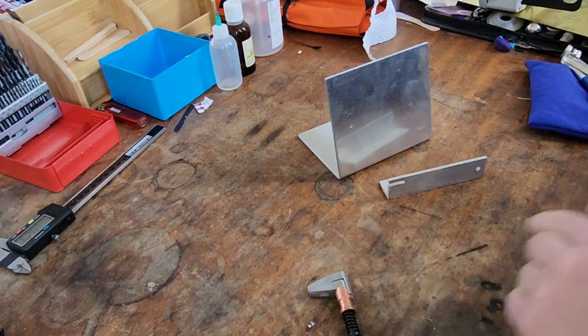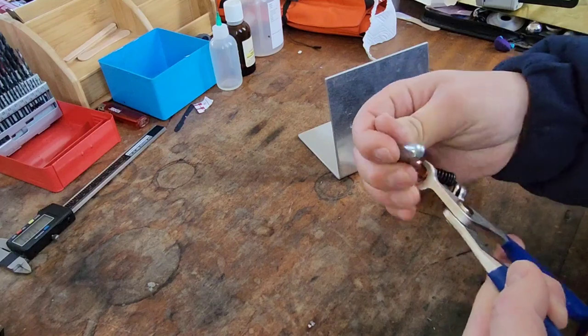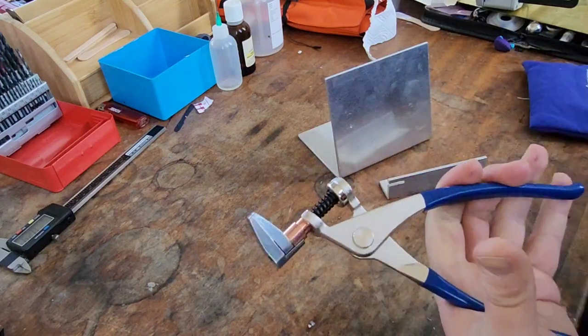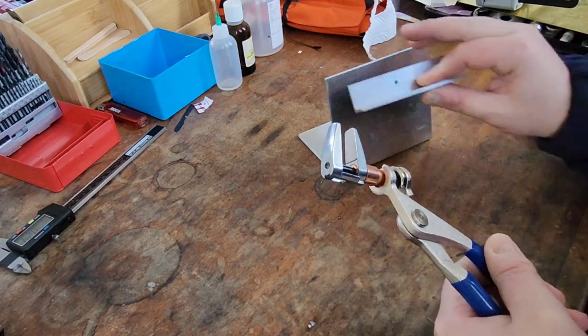They're like a little powerful spring-loaded clamp and you use them with this tool here. So you load them into the tool and then you can squeeze the tool and it opens up the jaws and you can clamp some stuff together.